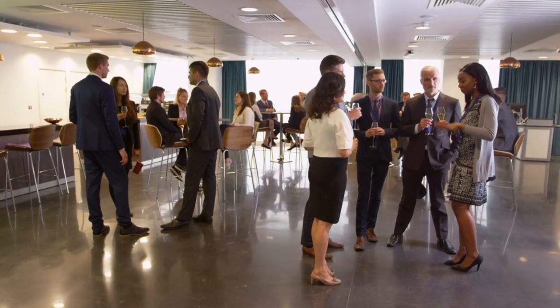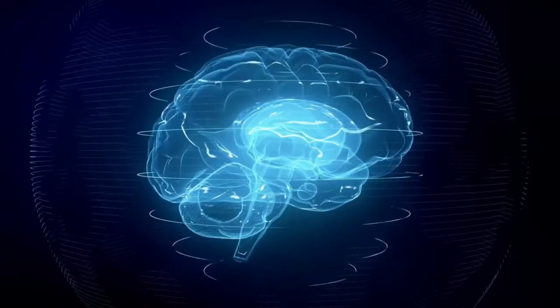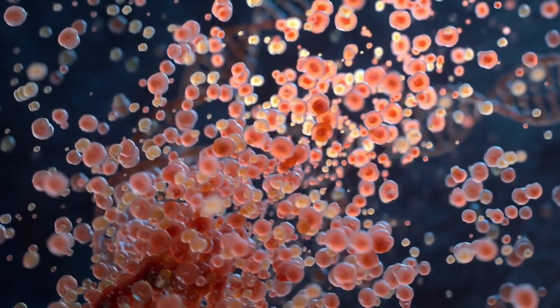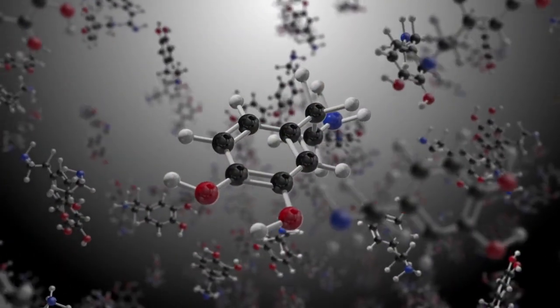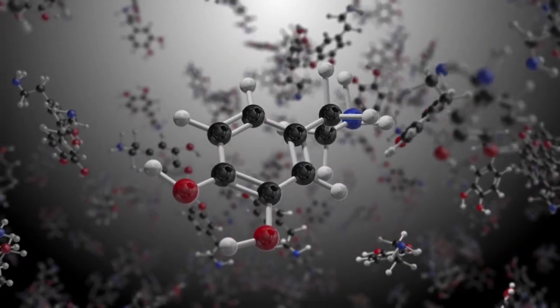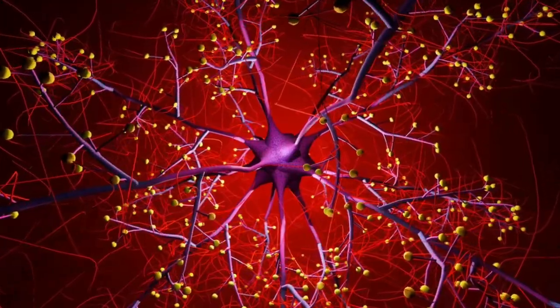Imagine a bustling city with millions of citizens moving about, communicating, working, playing, and living their lives. That's the brain, a city of neurons, a network of about 100 billion nerve cells intricately connected. Each neuron, a citizen of this city, communicates with others, sending messages through an elaborate system of neural pathways. It's this intricate web of connections that enables everything we think, feel, and do.